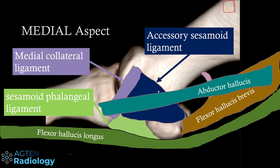This is a sagittal view from the medial side, which should give a better understanding of these different ligaments. The medial sesamoid is here, with the flexor hallucis brevis inserting there. From the head of the first metatarsal bone you can see the medial collateral ligament running obliquely — similar to the thumb at the metacarpophalangeal joint. This is now the accessory sesamoid ligament, which is somewhat triangular in shape, blending in with the sesamoid and connecting it to the metatarsal head. There is also one on the lateral aspect.